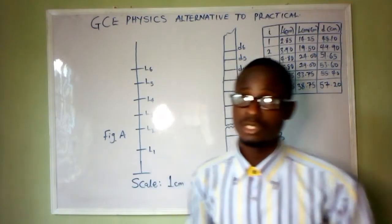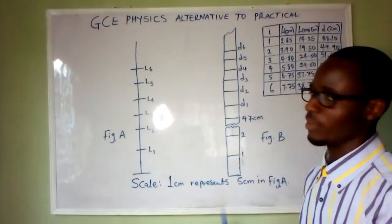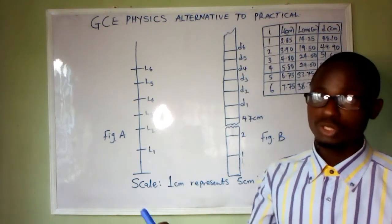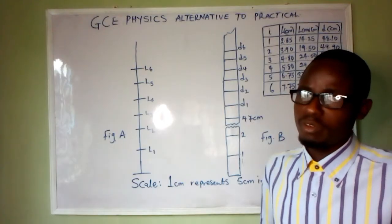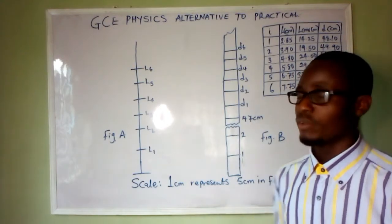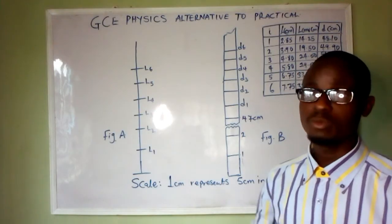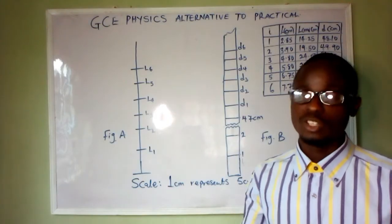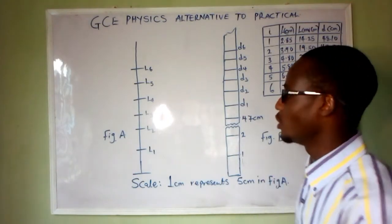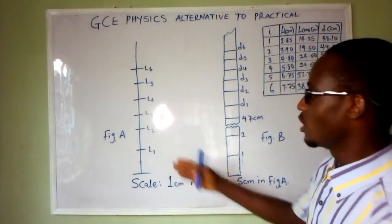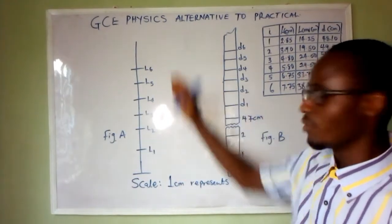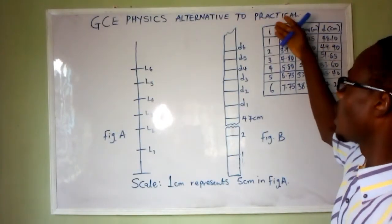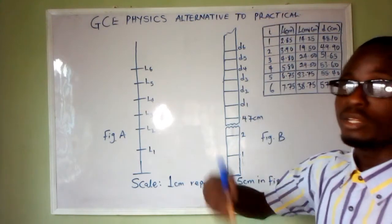Now we've gone through the question, let's see how to take readings from the diagram. We are not performing the experiment ourselves — we're already given a diagram where we take our readings, meaning the experiment has been performed and the record has been put in diagram form for us to extract the real values. The distance L in the question is shown in this diagram, and I've already made my table with columns for L1, L2, and so on.